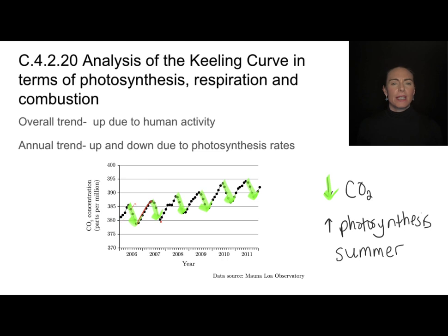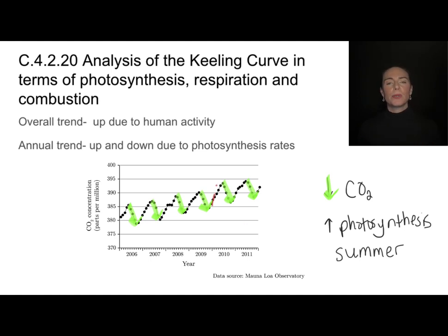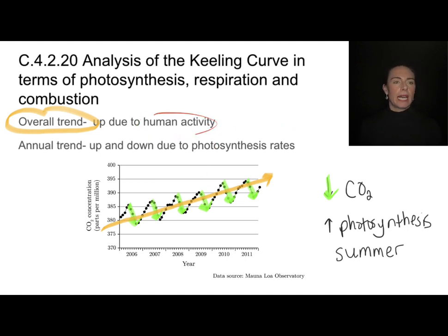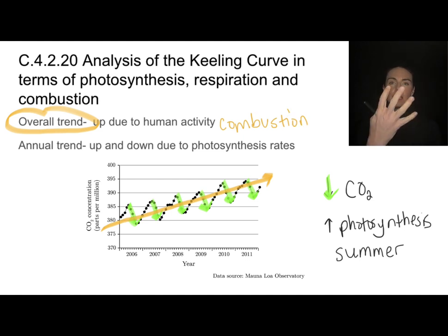This uptick we're seeing every year is probably due to the fact that it's winter. In winter, there's going to be less photosynthesis, and not as many photosynthetic processes to absorb the carbon dioxide, so we'll see this little annual trend upwards. That's very different from the overall trend. Looking at the overall trend, it's not going up and down — it is steadily increasing. This is not something we can attribute to normal winter-summer, more-photosynthesis, less-photosynthesis cycles. This is due to human activity, and the most likely culprit is the combustion of fossil fuels — adding more carbon dioxide to the atmosphere than is being taken in.